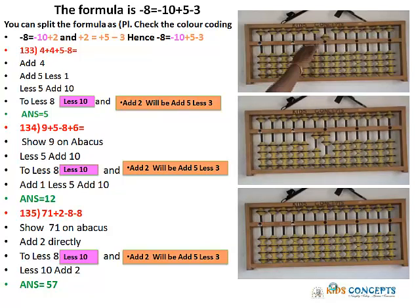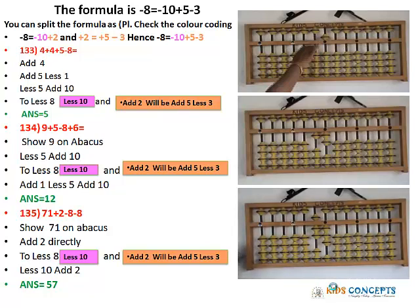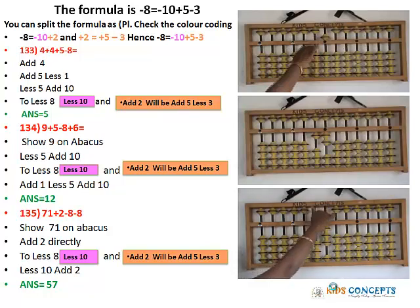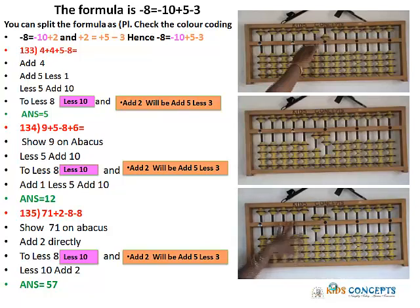Let's move to the third problem: 71 plus 2 minus 8 minus 8. So, 71 is shown on the abacus. Add 2 to it — you can add 2 directly. Less 8 — Less 8 is Less 10, Add 5, Less 3. Again, Less 8 — Less 8 is Less 10. Now remember, you have the beads to add, so you can Less 10 and Add 2 directly.